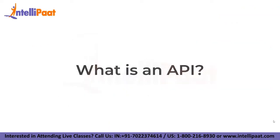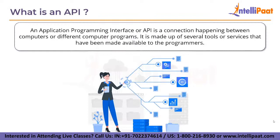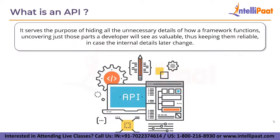Now let's discuss about APIs. What is an API? An Application Programming Interface or API is a connection happening between computers or different computer programs. It is made up of several tools or services that have been made available to programmers. Most organizations, particularly tech organizations, have fabricated APIs for their clients for inner use. It is responsible for connecting the parts of software with one another. It serves the purpose of hiding all the unnecessary details of how a framework functions, uncovering just those parts a developer will find valuable, thus keeping them reliable in case the internal details later change.